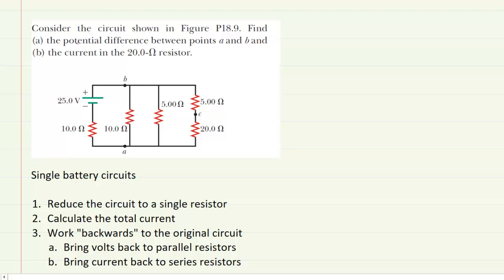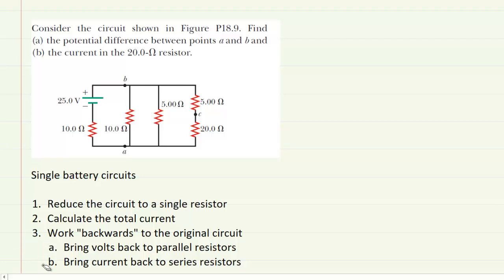To determine the potential difference between points A and B of this circuit, you will first notice that this circuit contains just a single battery. There is a nice three-step method you can follow for single battery circuits. In step one, we reduce the circuit to a single resistor. In step two, we calculate the total current. In step three, we work backwards to the original circuit, following two rules outlined below.